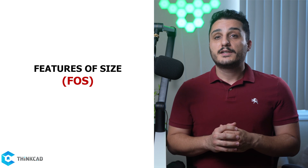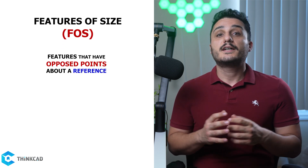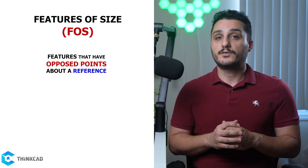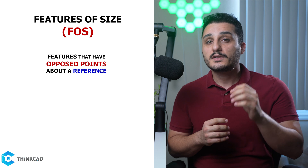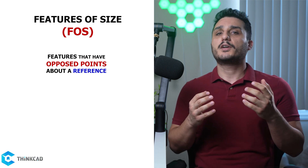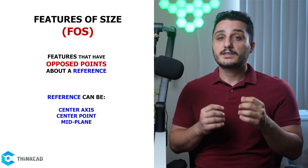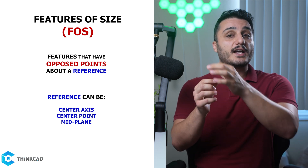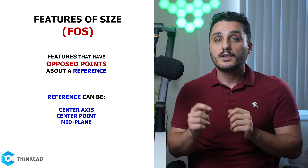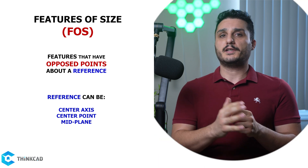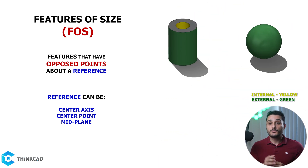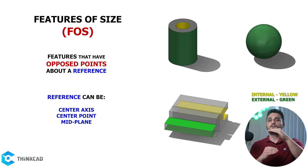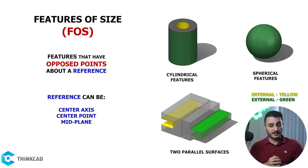Features of Size, or FOS, are features that have points on opposite sides of a reference. A reference can be a center axis, a center point, or a midplane. Cylindrical features have a center axis, spherical features have a center point, and two parallel surfaces have a midplane.